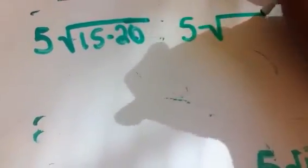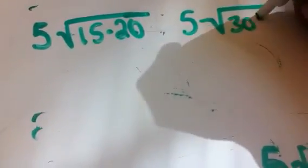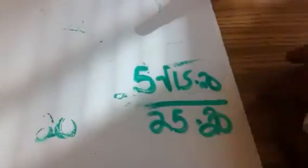Alright, let's finish this up. So 5 times the square root of 15 times 20 is going to give us 5 times the square root of 300, all over 25 times 20, which is equal to 500.